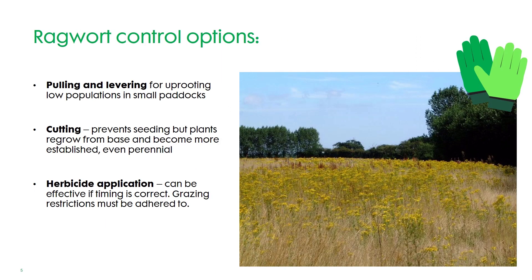Looking at the control options available for ragwort. The first would be pulling or levering out of the ground with a ragwort fork. This may be practical with low populations in small paddocks — do wear gloves as they are toxic and can be irritant to skin. The second method is cutting. This can be useful to prevent seeding, but the plants regrow from the base. With the central growing point removed they become more sturdy and established, and with continuous cutting they can even become perennial.